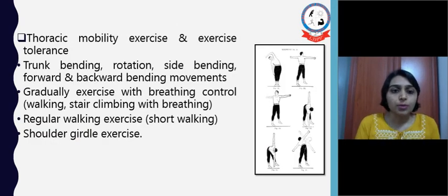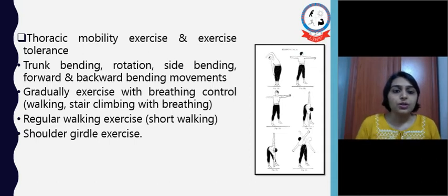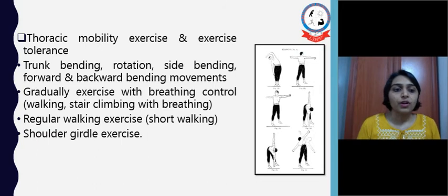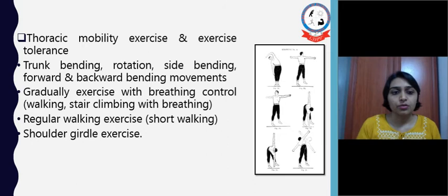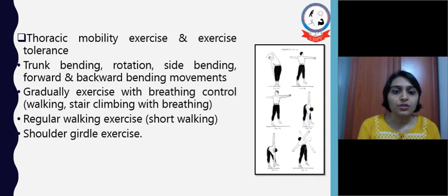Next is thoracic mobility exercise and exercise tolerance. We ask the patient to do trunk bending, rotation, side bending, and forward and backward bending movements. Gradually, exercises with breathing control can be added, like breathing control during walking and stair climbing. Regular short duration walking exercises are always encouraged. Shoulder girdle exercises are also given to maintain shoulder range of motion.